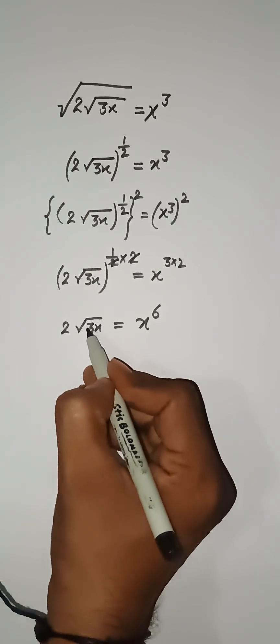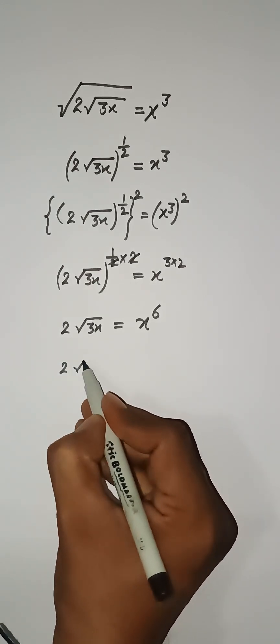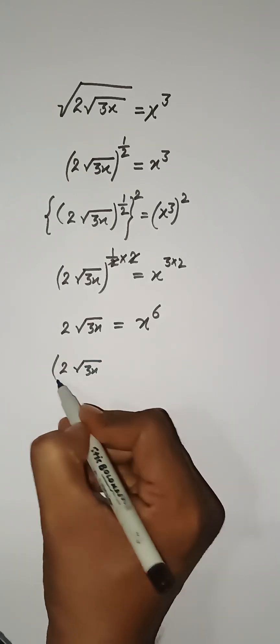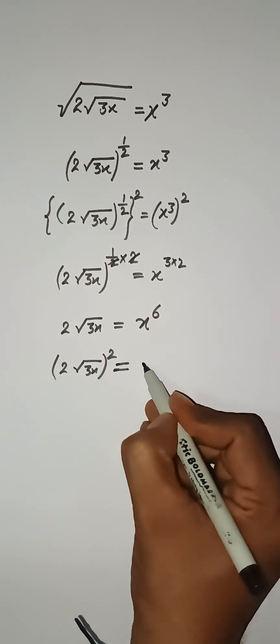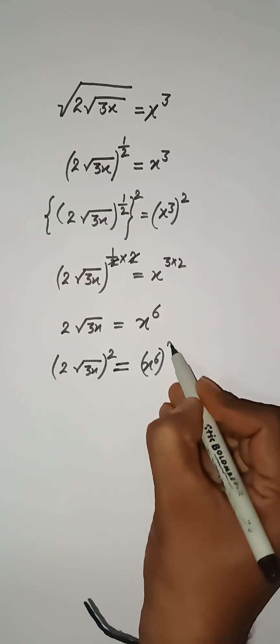Now I need to remove this square root also, therefore once again I am putting a square on both sides. Here we have x⁶ and here we have power 2.